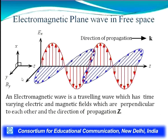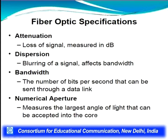The electromagnetic wave propagation diagram shows the z-axis as propagation direction, x-axis for electric field, and y-axis for magnetic field. The electromagnetic wave is a travelling wave with time-varying electric and magnetic fields perpendicular to each other and to the direction of propagation z. The important specifications for fiber optics are: attenuation — loss of signal measured in dB; dispersion — blurring of a signal affecting bandwidth; bandwidth — number of bits per second through the data link; and numerical aperture — the largest angle of light that can be accepted into the core.